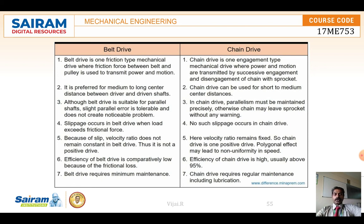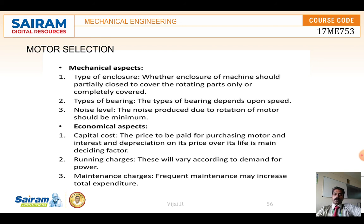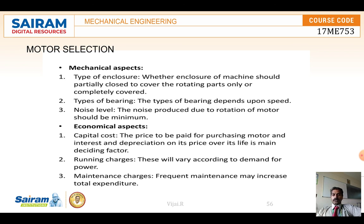When selecting a motor, we must also check mechanical aspects such as bearing type, noise level, and the type of enclosure used to cover rotating parts — whether partially or fully covered. On the economical side, cost variations and maintenance charges are also evaluated before selecting a motor. These are the key topics covered in this module on mechanical actuation systems.